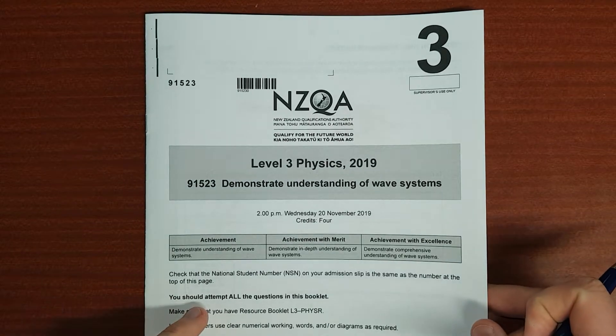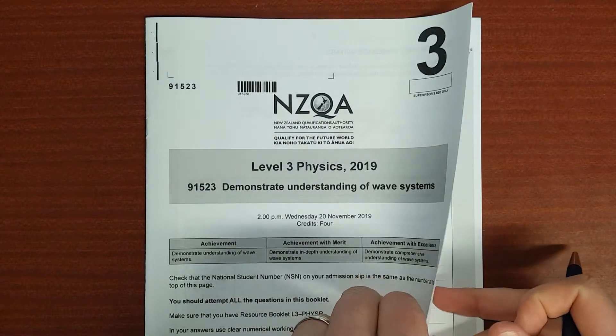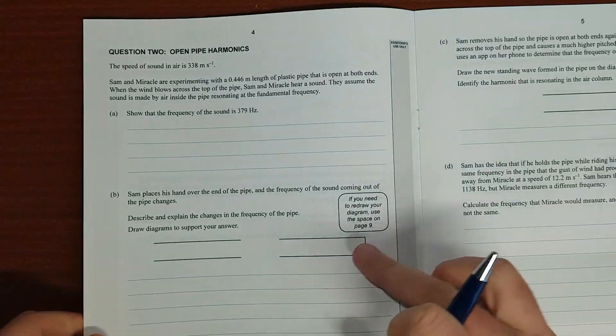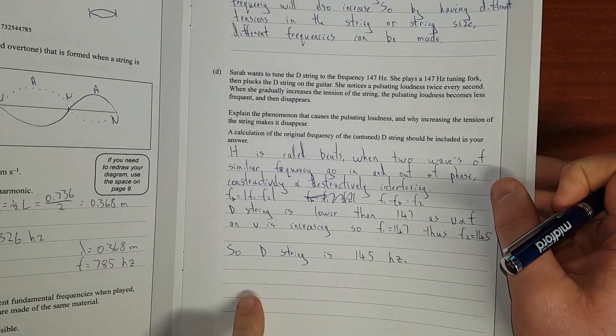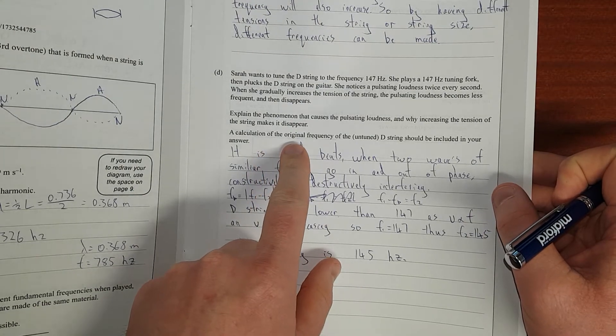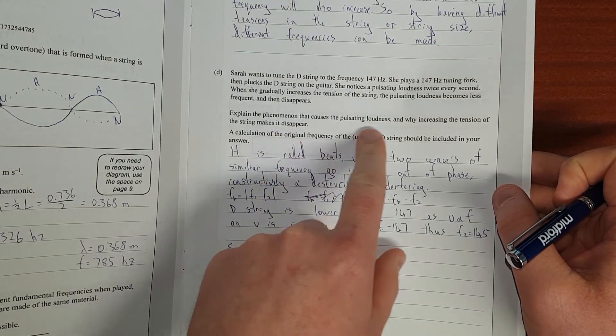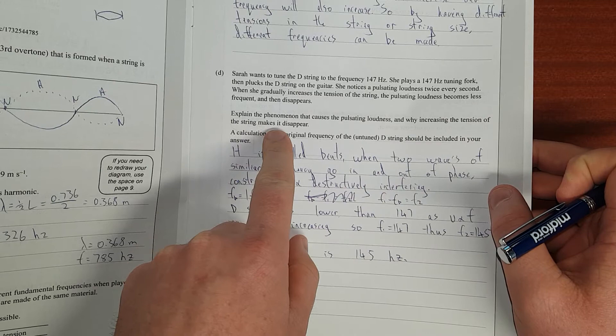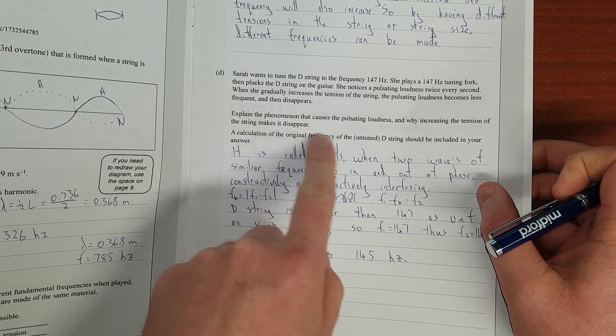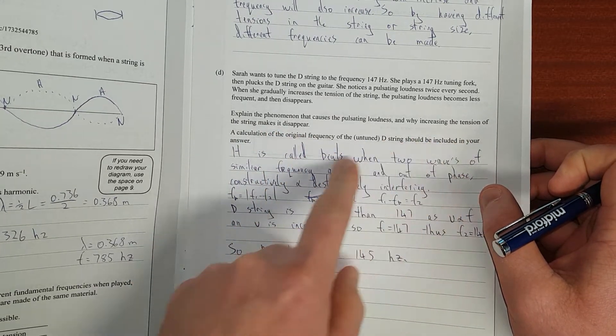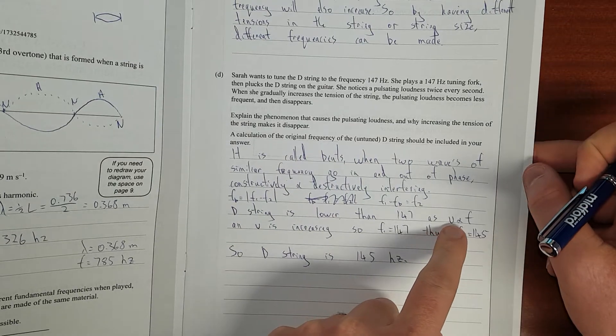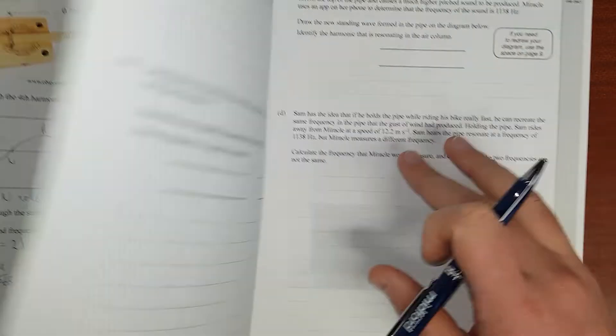This is the 2019 Level 3 Waves exam, question 2. Just a side note, if you've just watched the question 1 video, I missed out saying why increasing the tension of the string makes it disappear. It's because when you increase the tension, it increases the velocity, which increases the frequency, which I've roughly alluded to here.